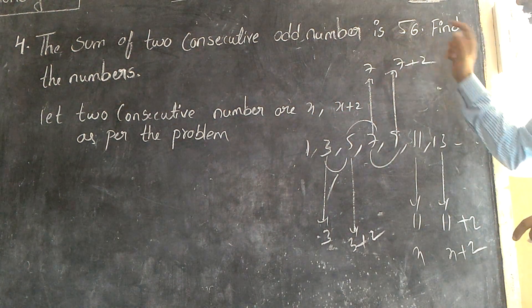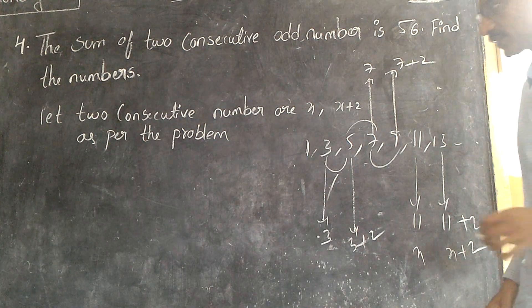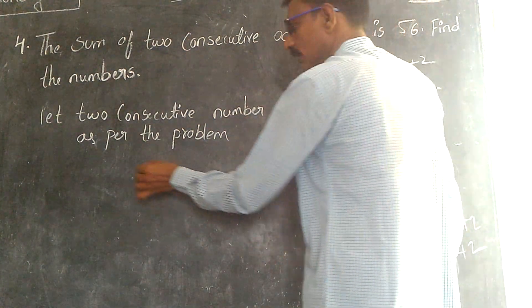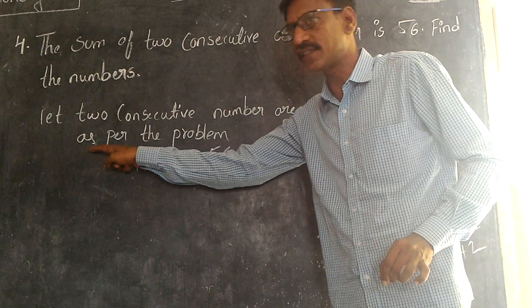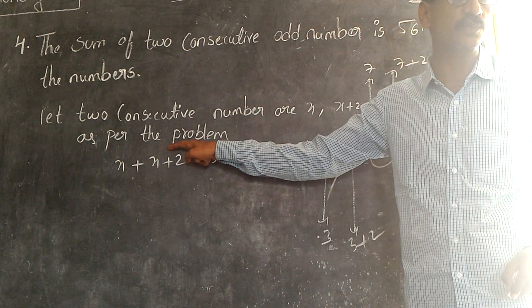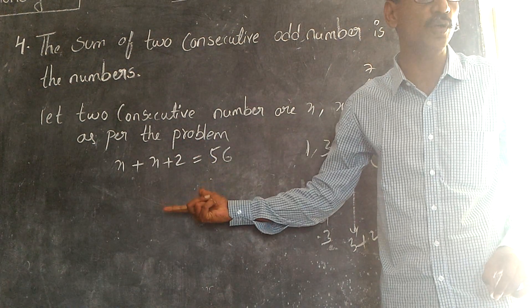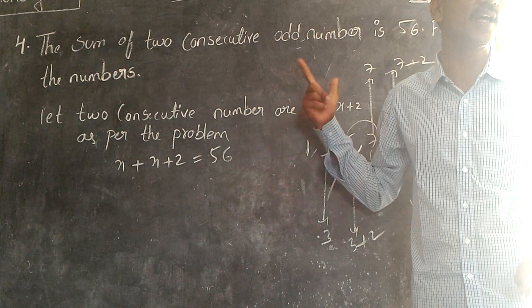But the sum is given how much? Fifty-six. Can I write it down here? Yes. So x plus x plus two is equal to how much? Fifty-six. As per the problem, sum of two consecutive odd numbers is fifty-six.